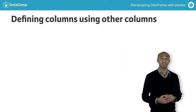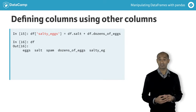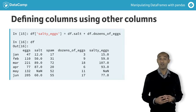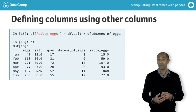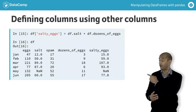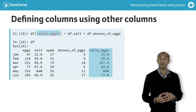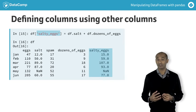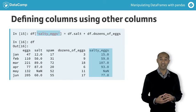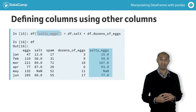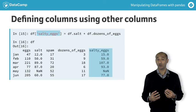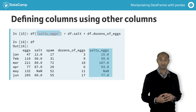Many arithmetic operators, for instance the plus sign, work with data frames and series directly. Thus, here we create a new column, salty eggs, by adding the salt and eggs columns together. If we can express a calculation using pandas alone, that's always preferable to using loops.